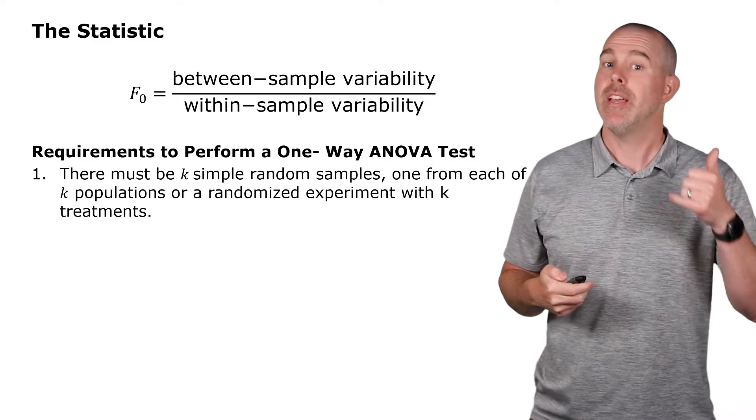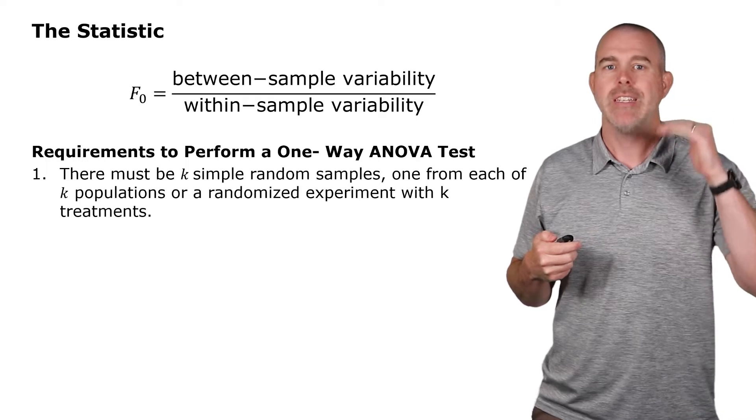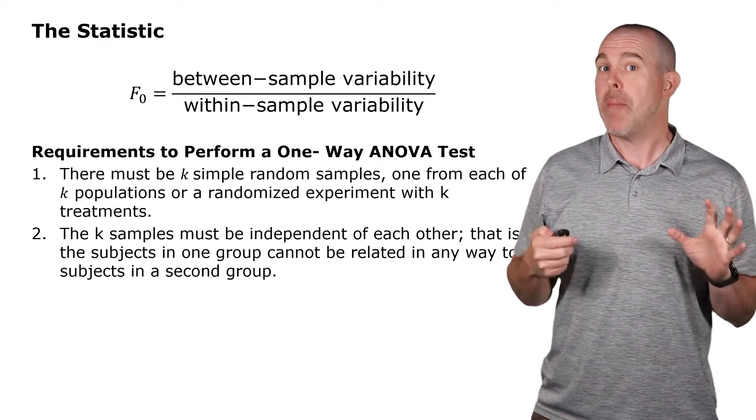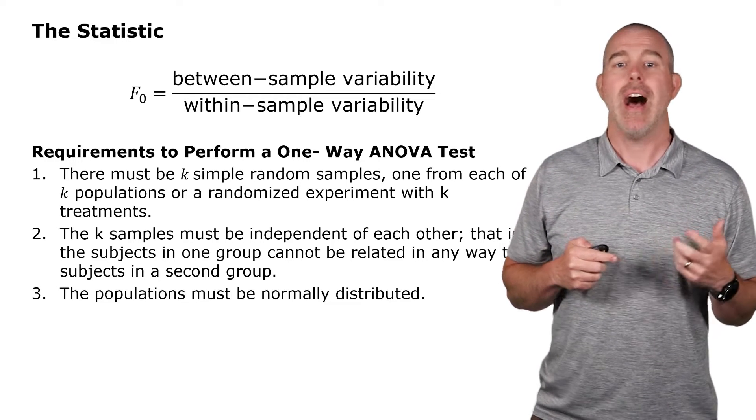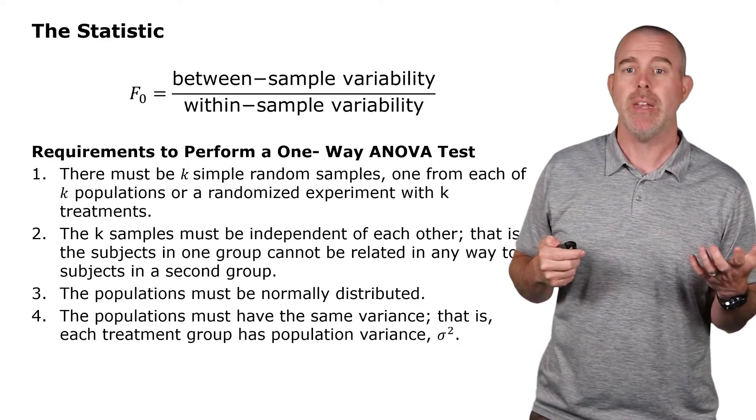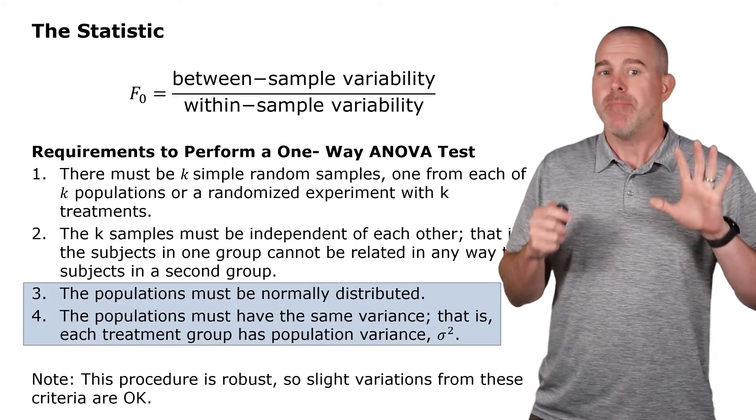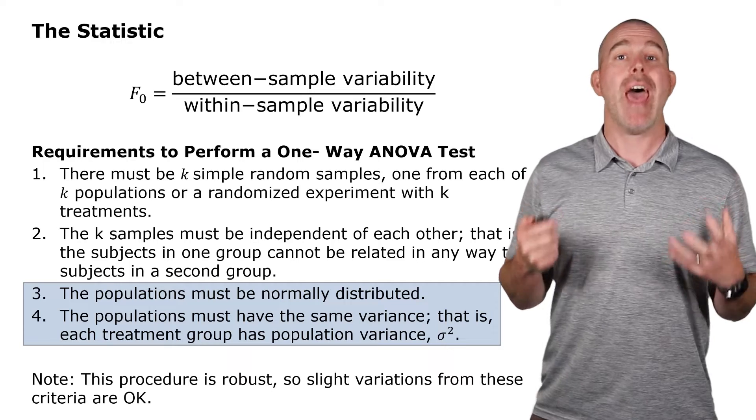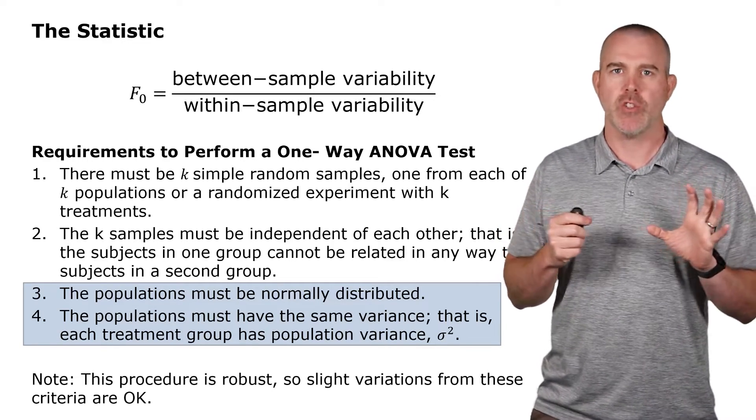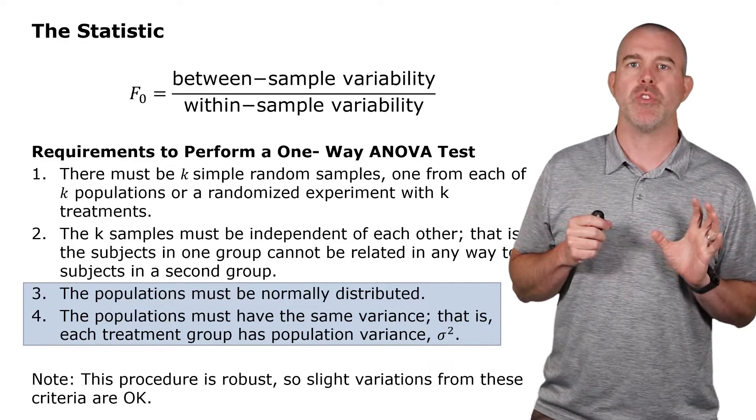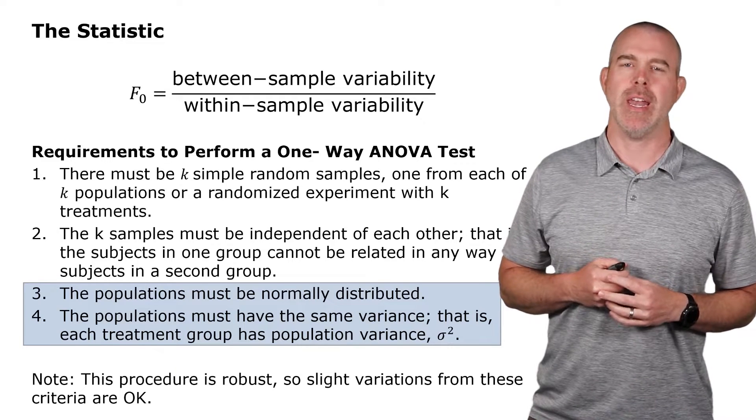The requirements to perform this test: you have to have k simple random samples, one from k different populations. They have to be independent of each other, so they can't be paired or grouped. And then the populations here have to be normally distributed and have to all have the same variance. Now, for these last two here, this procedure is pretty robust, meaning you can have some slight deviations from a normal distribution, and the variances don't have to be identical. We'll talk more about this later on when we look at an example.